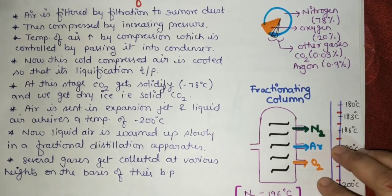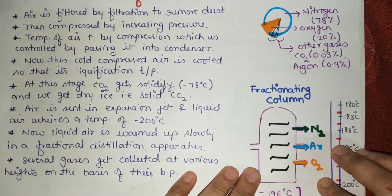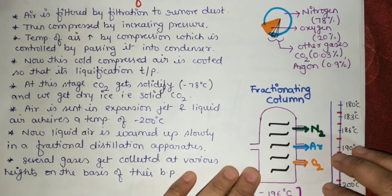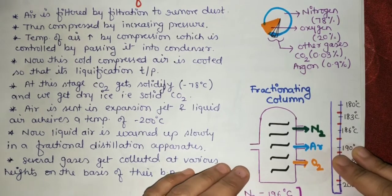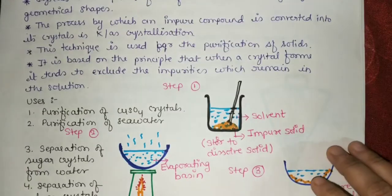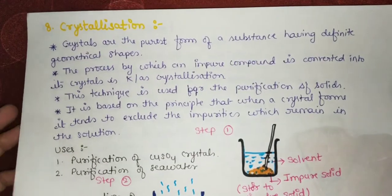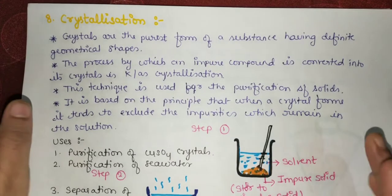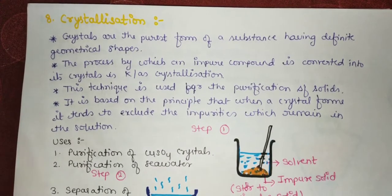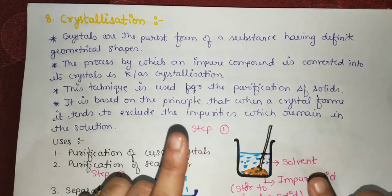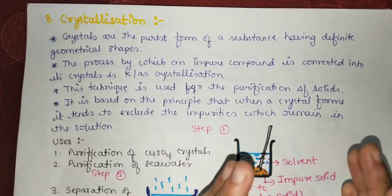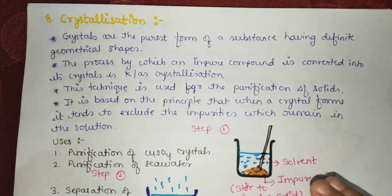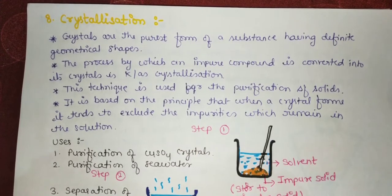This is very helpful for understanding the function of the fractionating column in separating gases from air in liquid form. Now let us learn about the next technique: crystallization. Crystals are the purest form of a substance having definite geometrical shapes.